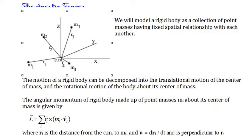We model a rigid body as a collection of point masses having a fixed spatial relationship with one another, and we're considering only rotational motion of a rigid body about its center of mass. The contribution of each point mass m sub i to the angular momentum is a vector with magnitude equal to the linear momentum of m sub i due to rotational motion times r sub i, the vector from the center of mass to m sub i. The direction of the angular momentum is given by the right-hand rule, rotating r sub i into the velocity vector for m sub i. Summing the contributions of each of the point masses, we have an expression for the total angular momentum of the rotating body.